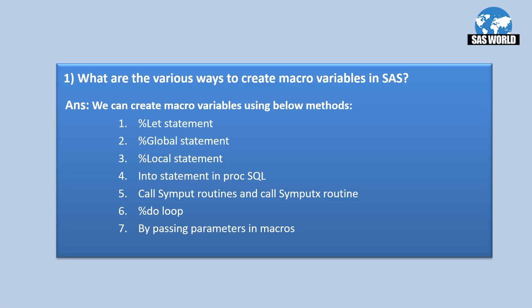First is %LET statement. Second is %GLOBAL statement, which is used to create global macro variables. Third is %LOCAL statement, used to create local macro variables. Fourth is creating macro variables in PROC SQL using the INTO statement. Fifth is by using CALL SYMPUT and CALL SYMPUTX routines. Sixth is using a %DO loop, and seventh is by passing parameters in macros.